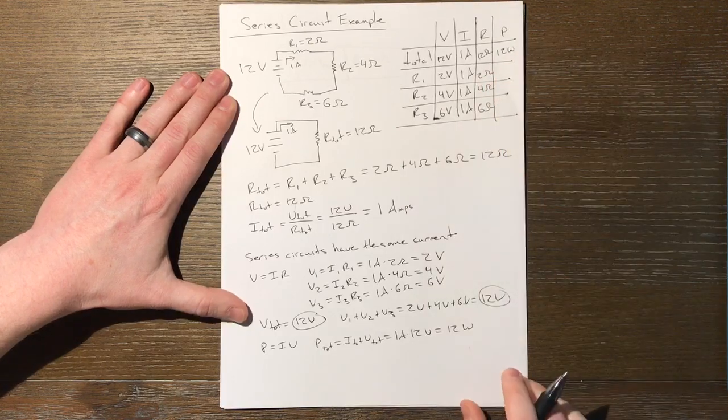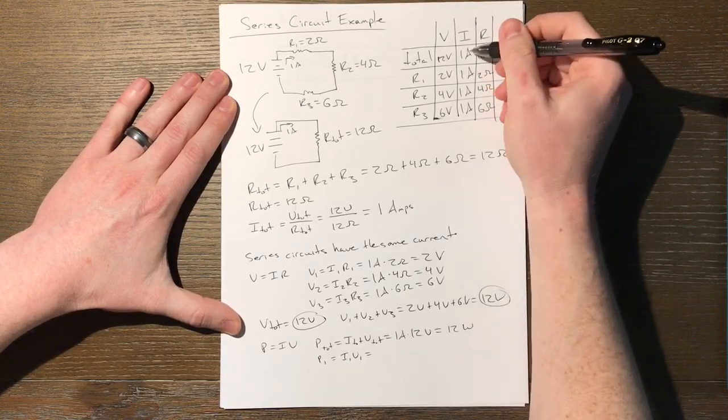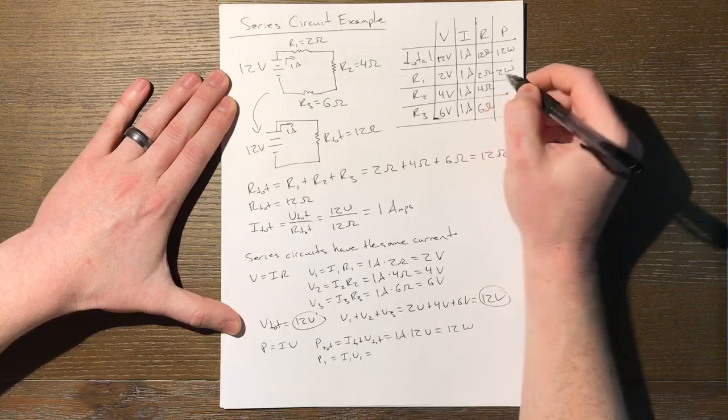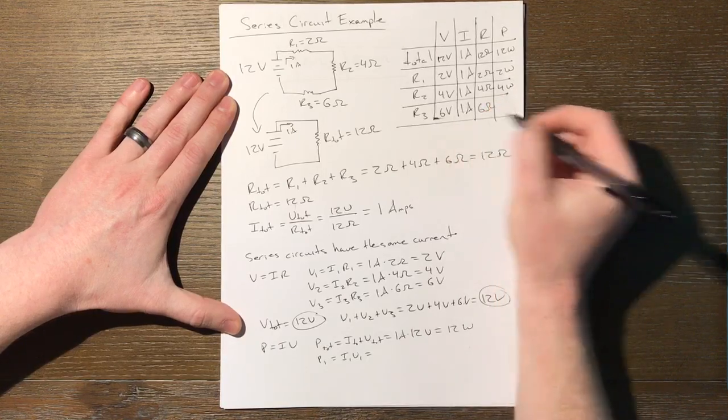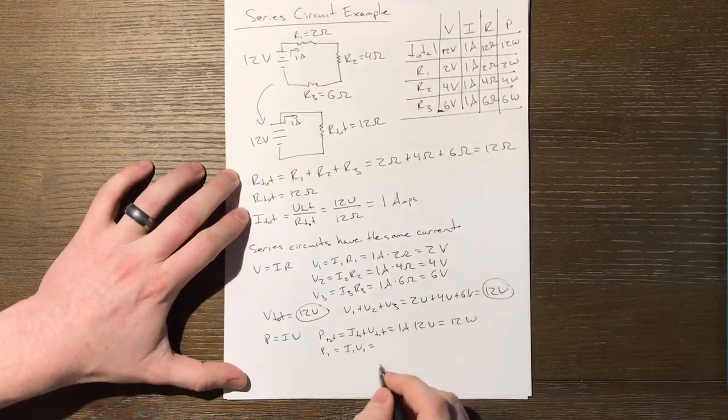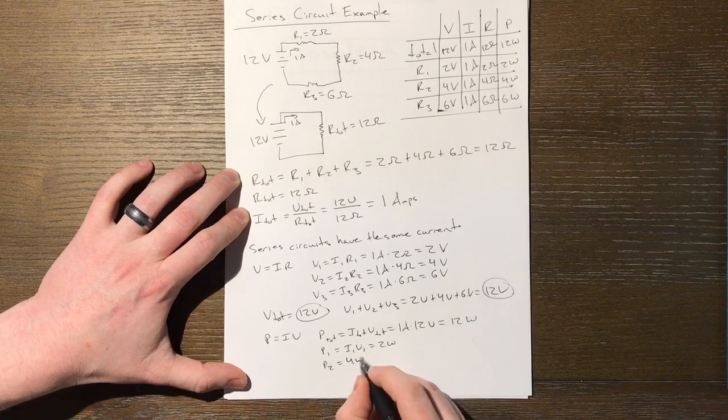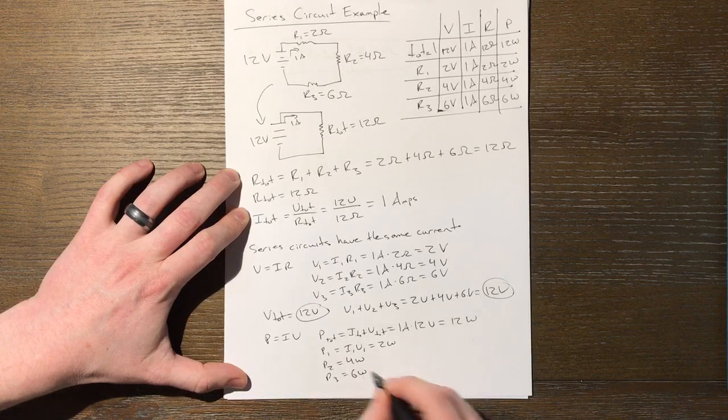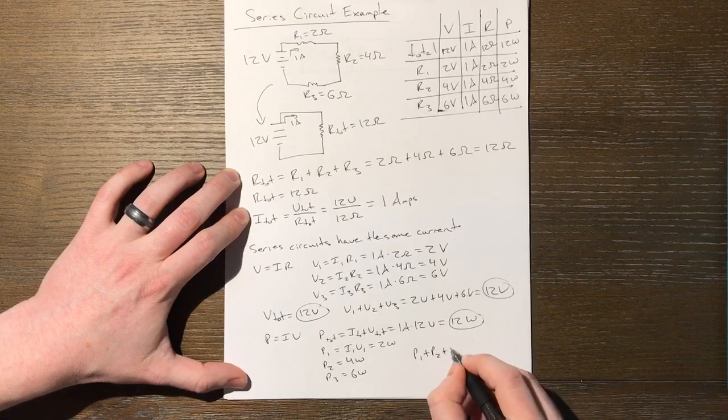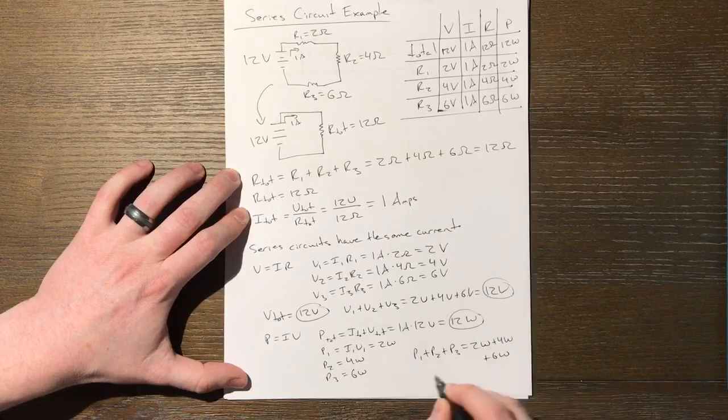IV, 12 watts. And what about our individual pieces? P1 is I1 V1. I'm just going to multiply these quickly. 1 times 2 is 2 watts. I2 times V2. 1 times 4, 4 watts. 1 times 6, 6 watts. And if we add up all of the individual components and their power consumptions, it should equal the total power supplied by the battery. And so we have 12 watts as our total power. P1 plus P2 plus P3 is 2 watts plus 4 watts plus 6 watts. Sure enough, 2 plus 4 plus 6 is indeed 12 watts.